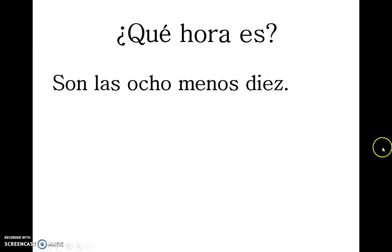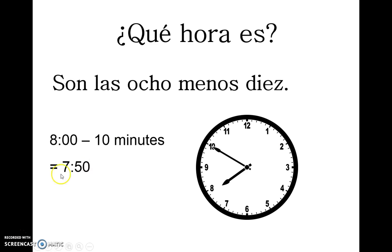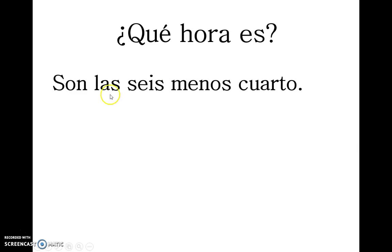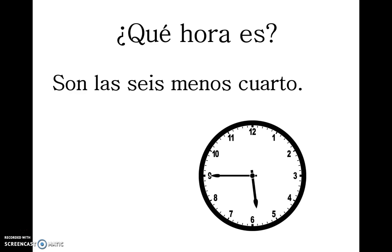¿Qué hora es? Son las ocho menos diez. Menos diez. The answer is seven fifty — it's eight o'clock minus ten minutes. Seven fifty. ¿Qué hora es? Son las seis menos cuarto. It's five forty-five. It's six o'clock minus fifteen minutes — a quarter of an hour — so it's five forty-five.